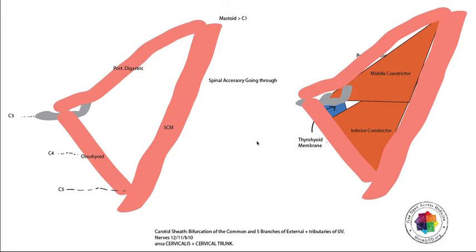Today we're going to be talking about the carotid triangle, and if there's one thing to say about it in overview, it's that the carotid vessels pass through. That's the most important thing, and basically that's the basis for which all of the other structures in the triangle are related. We're going to talk first about the borders of the triangle and then about the contents.